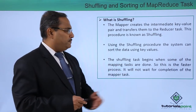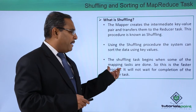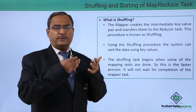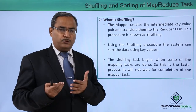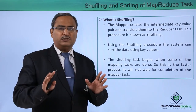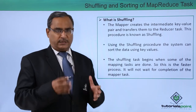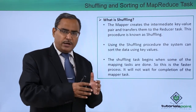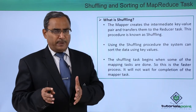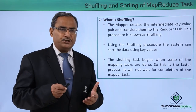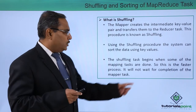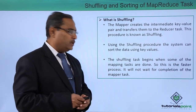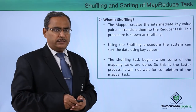The shuffling task begins when some of the mapping tasks are done — it does not wait for all mappers to complete. So when some of the mappers have produced outputs, the shuffling operation will work on that. This makes it a faster process, as it does not wait for the completion of all mapper tasks.